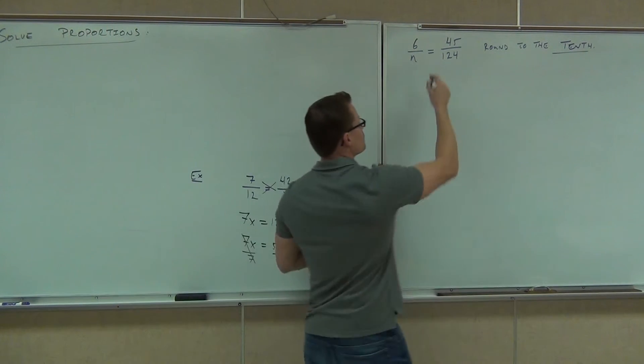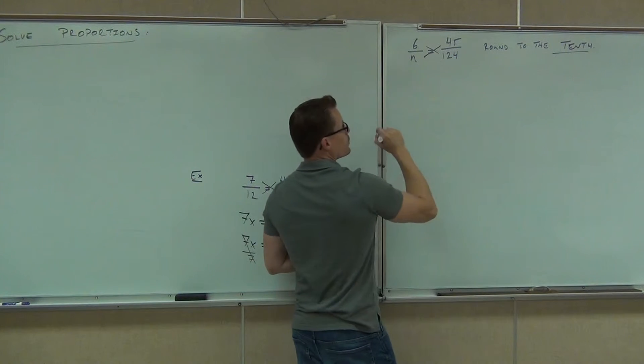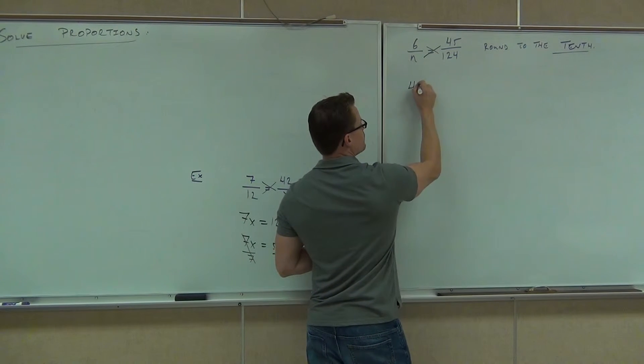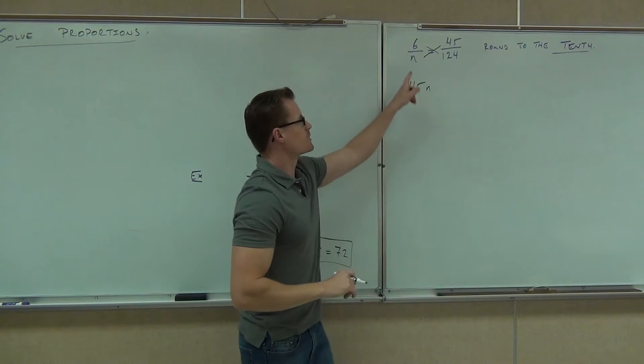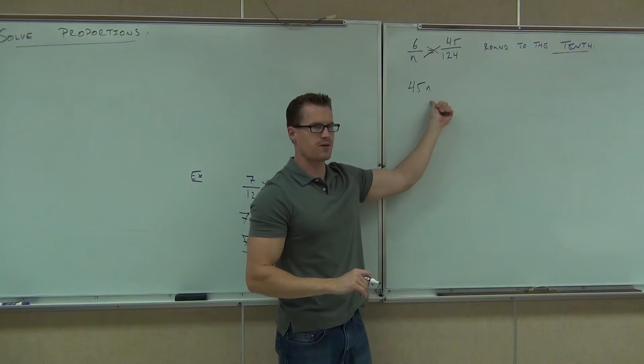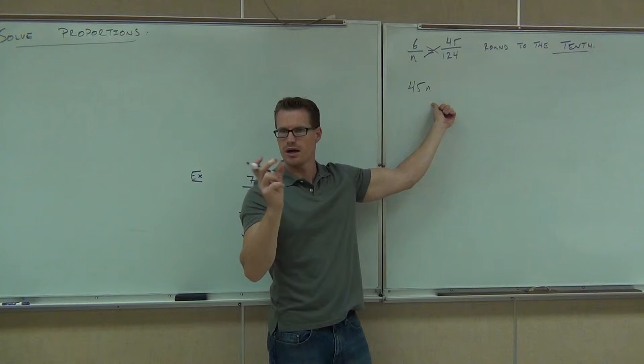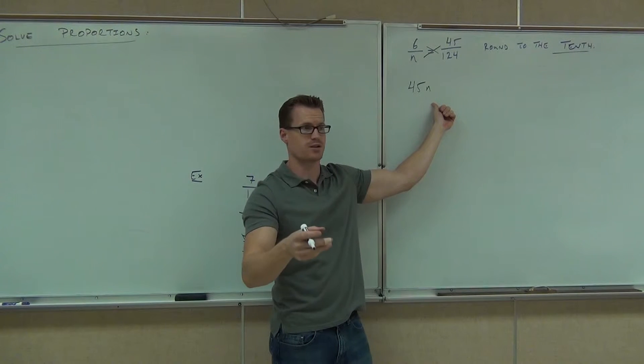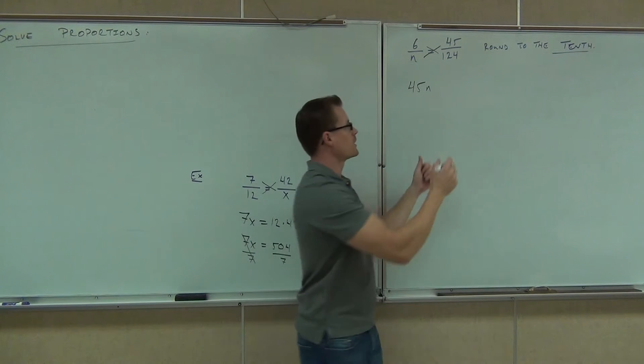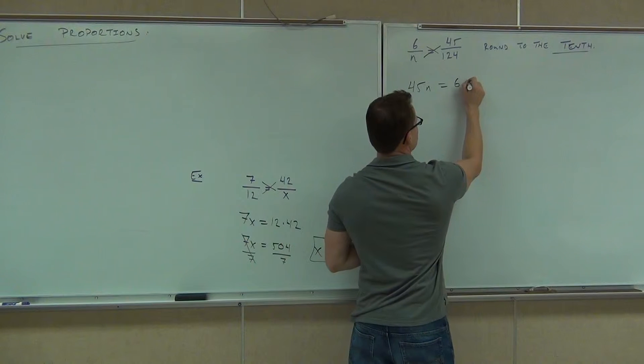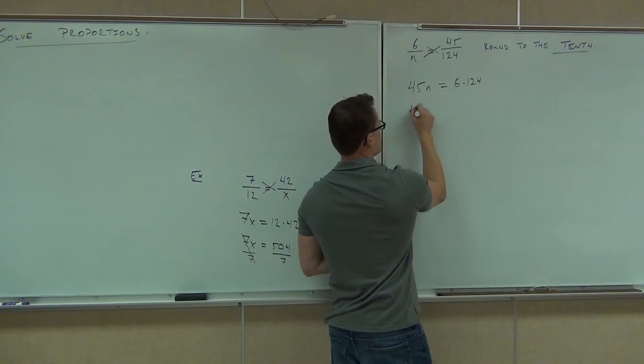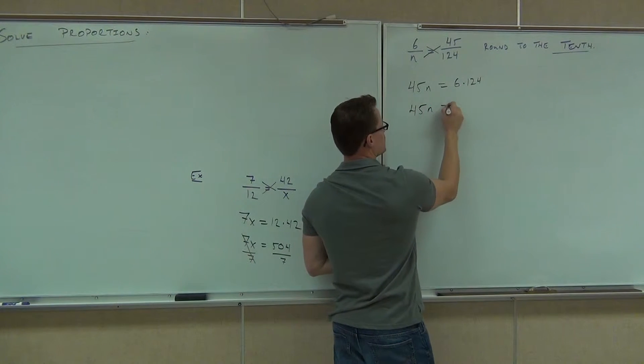Now the next one, we do the same idea. We will cross multiply, so we'll get 45N. Notice how even though it's N times 45, I can still put 45N because it's commutative, right? I can switch that around. N times 45 is the same thing as 45 times N. Are you guys with me on that? Equals 6 times 124. Wow, I don't know how much 6 times 124 is. How much is that? 744.